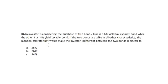An investor is considering the purchase of two bonds. One is a 6% yield tax-exempt bond, while the other is an 8% yield taxable bond. If the two bonds are alike in all other characteristics, the marginal tax rate that would make the investor indifferent between the two bonds is closest to: